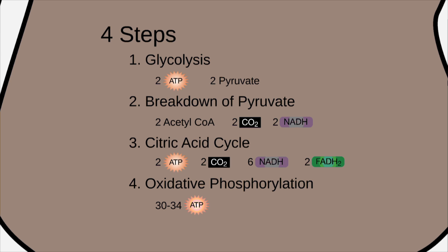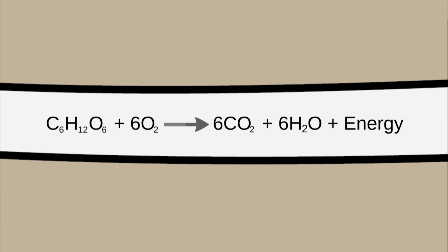This leads us to the overall equation for cellular respiration. C6H12O6, or glucose, plus six oxygen, creates six carbon dioxide, six waters, and lots of energy. The energy harnessed from cellular respiration comes in the form of ATP, which is used to drive many cellular processes. We hope this video helped you better understand cellular respiration.